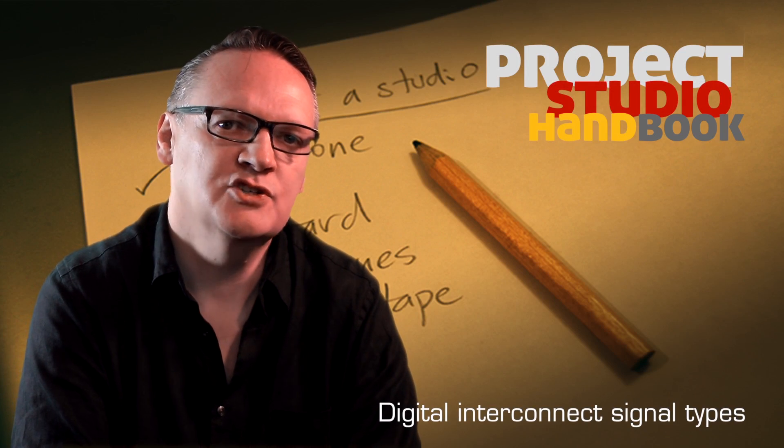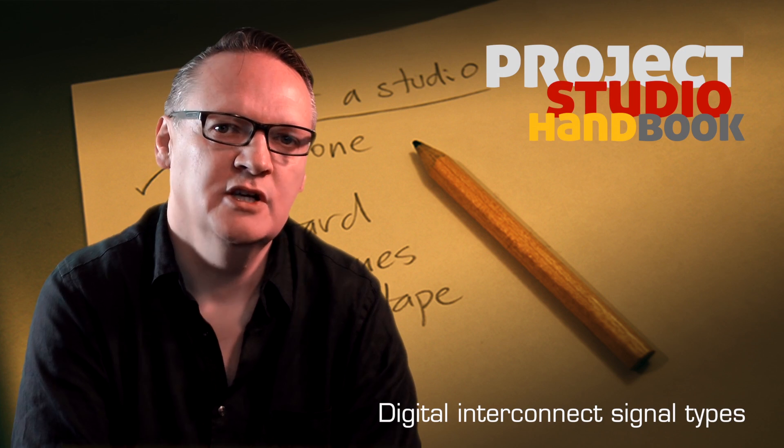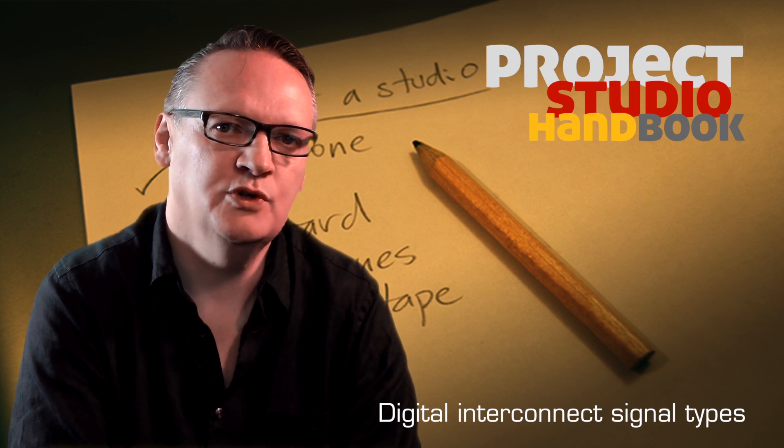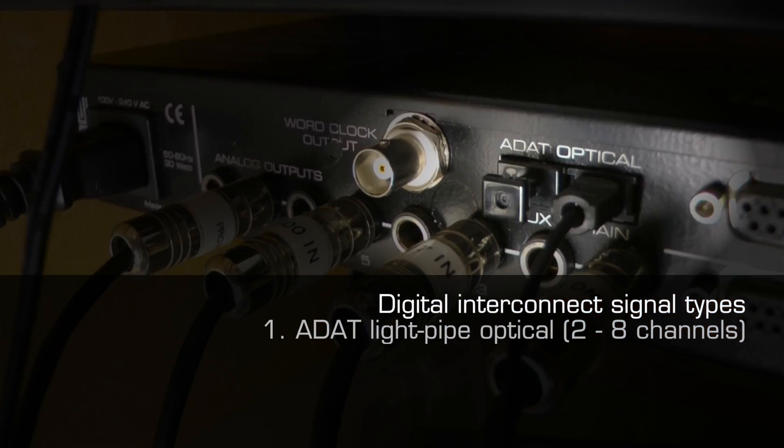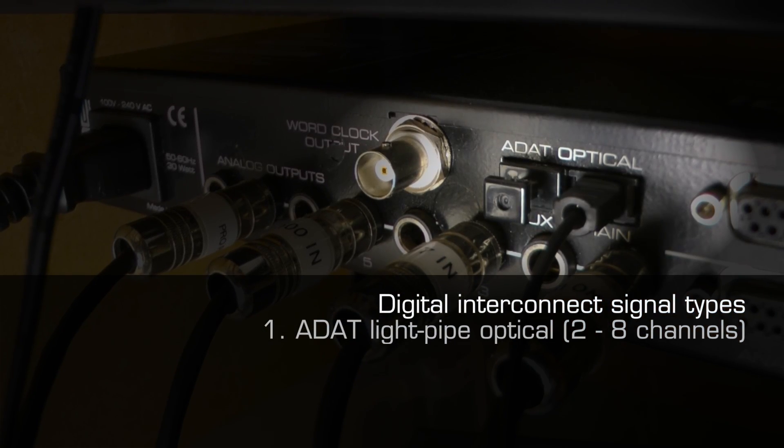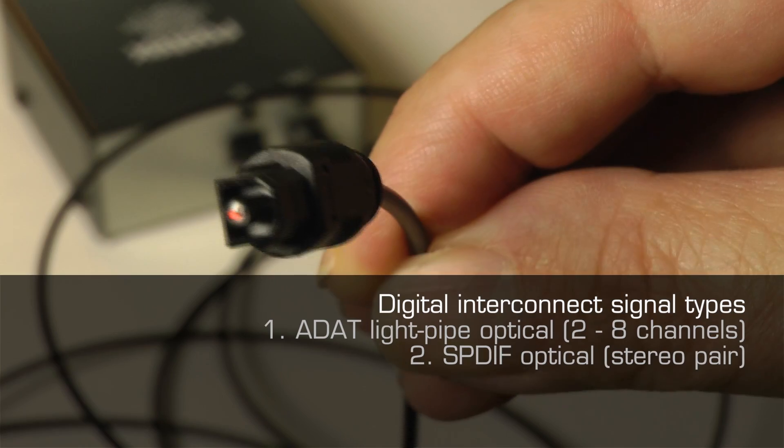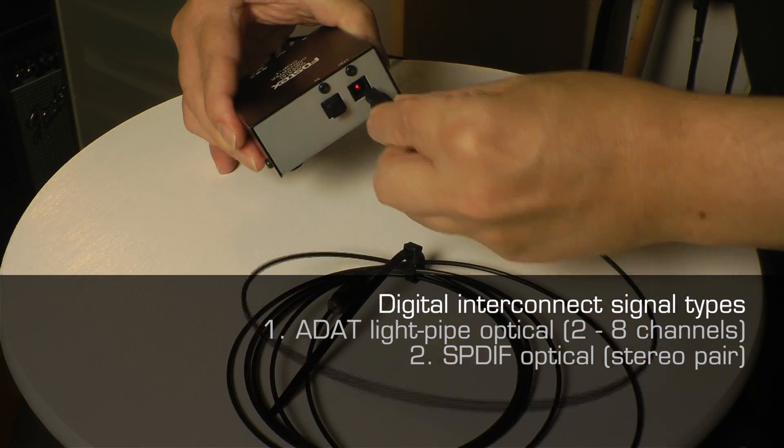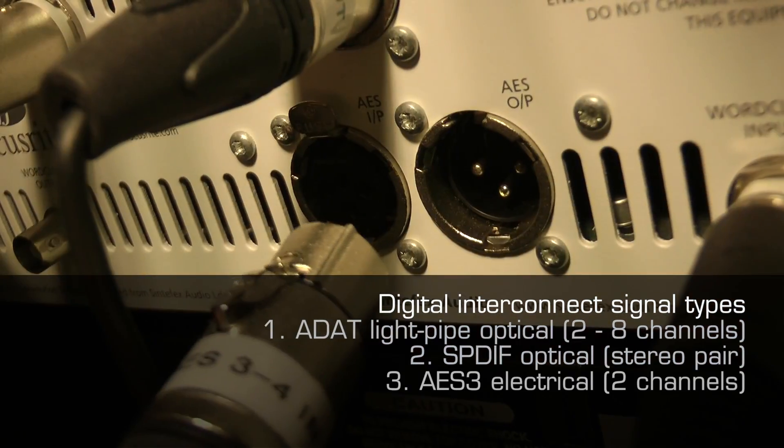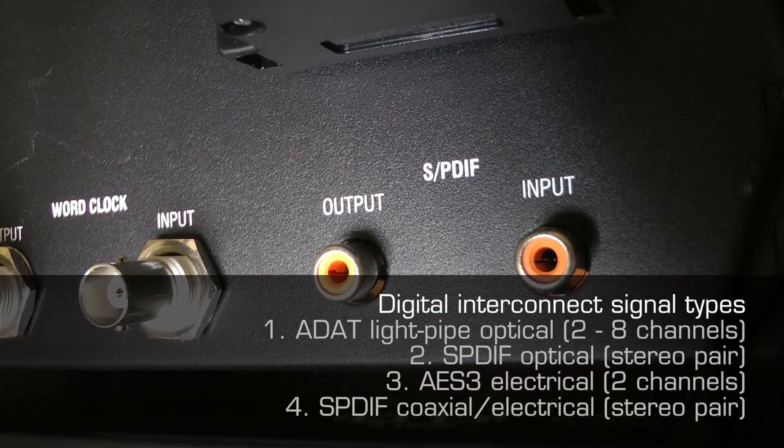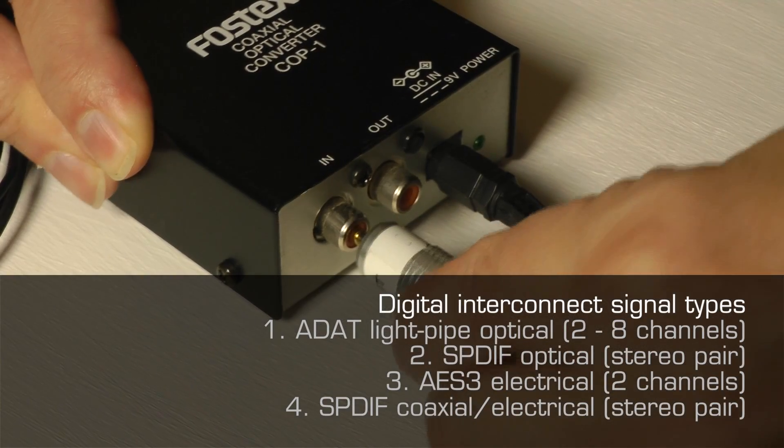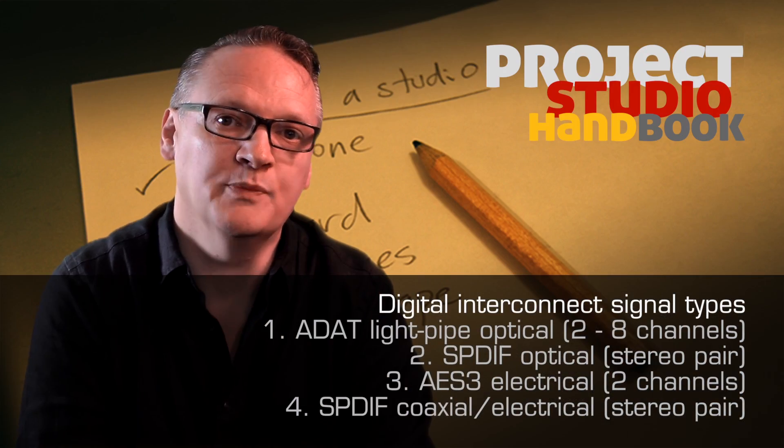There are four primary digital audio signal types used in the home and project studio. They are ADAT light pipe optical carrying between two and eight channels, SPDIF optical carrying a stereo pair, AES-3 electrical carrying two channels, and SPDIF coaxial, an electrical version of SPDIF optical.